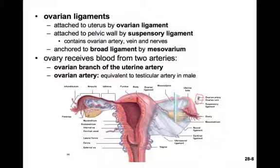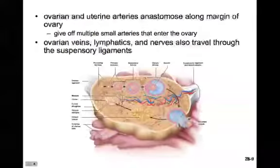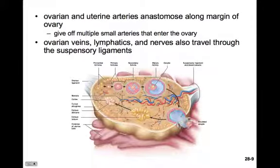The anterior margin of the ovary is anchored by a peritoneal fold called the mesovarium, which attaches it to the broad ligament. The ovary receives blood from two arteries, very similar to how the testes are supplied: an ovarian branch of the uterine artery, and an ovarian artery — equivalent to the testicular artery in males. These anastomose along the margin of the ovary, giving off small arteries that enter the ovary. The ovarian veins, lymphatics, and nerves also travel through the suspensory ligament.